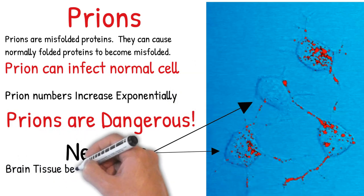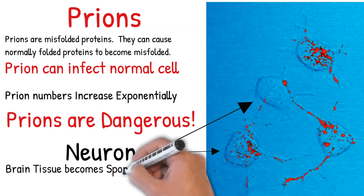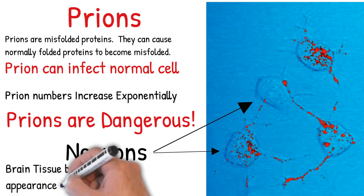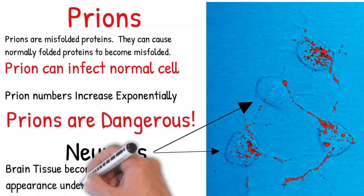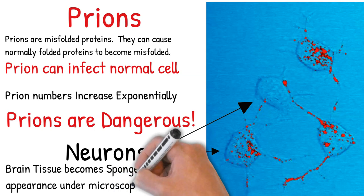This causes mental and physical abilities to deteriorate, and many tiny holes appear in the cortex, causing it to appear like a sponge when brain tissue obtained at autopsy is examined under a microscope.